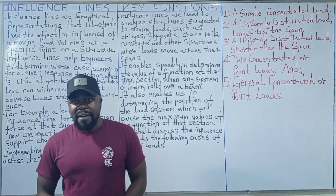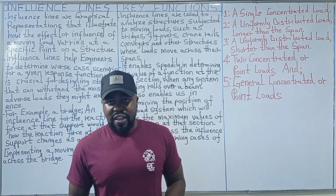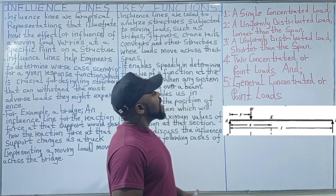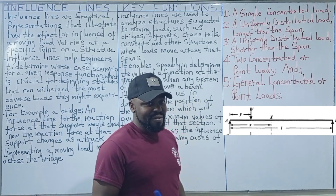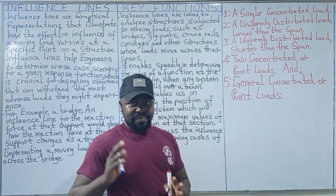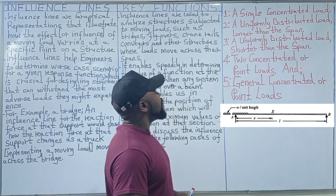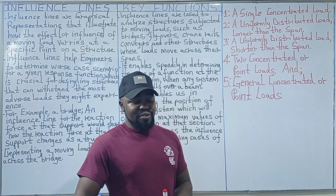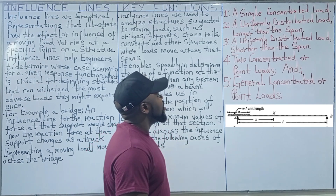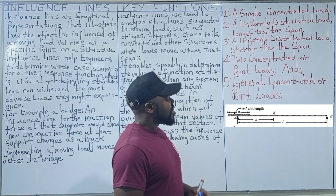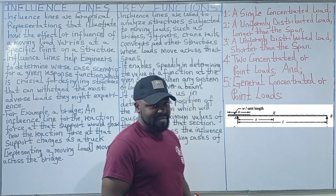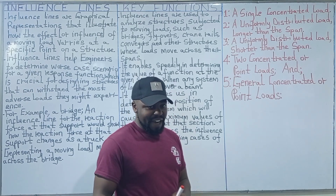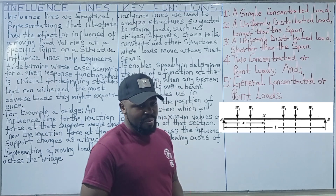We shall be discussing influence lines for the following cases of rolling loads: first, a single concentrated load; second, a uniformly distributed load longer than the span; third, a uniformly distributed load shorter than the span; fourth, two concentrated or point loads; and fifth, general concentrated or point loads.